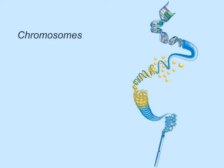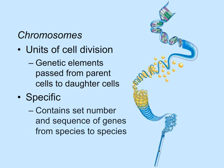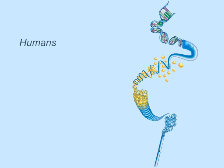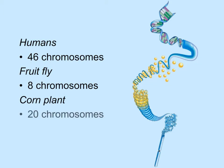Chromosomes are considered to be the units of cell division, as they contain the genetic information passed from one generation to the next. This information, contained in genes on the chromosomes, is specific to certain species. For example, humans have 46 chromosomes or 23 pairs. On each pair, we find a specific sequence of genes listing instructions for how to build specific biological molecules, while different pairs contain a different series of genes. Fruit flies have just 8 chromosomes, corn plants have 20, and each species has a specific sequence of genes along their chromosomes.